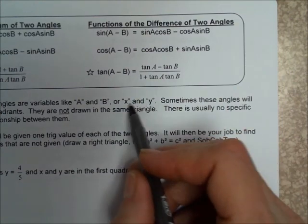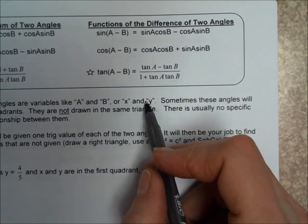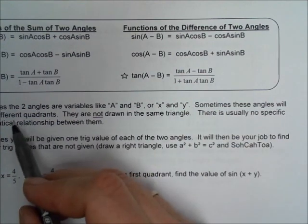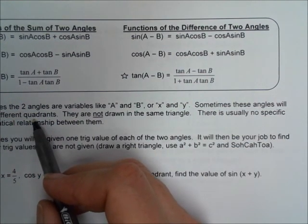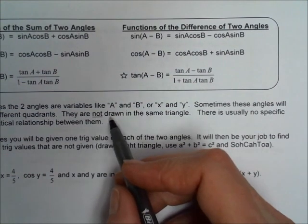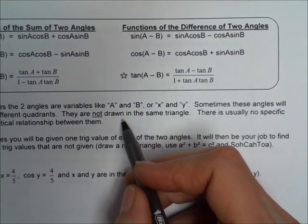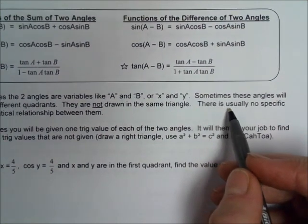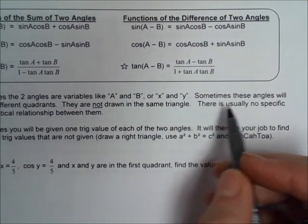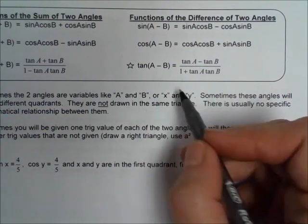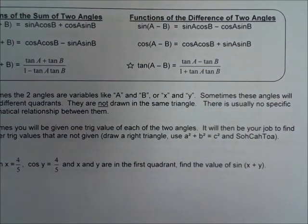These two angles are going to be sometimes in two different quadrants, like quadrant 2 and quadrant 3, or maybe they're both going to be in the same quadrant. You never know. But they're not going to be drawn in the same triangle. There's usually no specific mathematical relationship between A and B, or X and Y, or whatever the letters are.